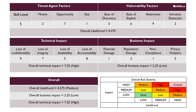Taking a simple example: you look at your threat agent factors, your vulnerability factors, your technical impact, and your business impact, and you assign a score to each one. The score can be from one to nine — the higher the factor, the higher the score. You assign scores to things like skill level and size, then average them to come out to an overall likelihood, which is 4.3 in this example.